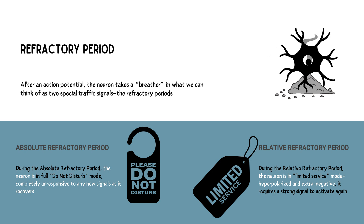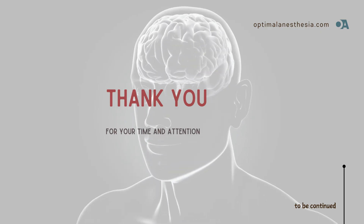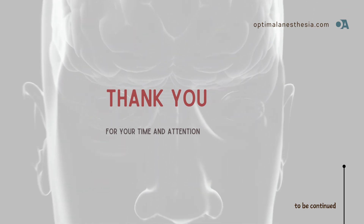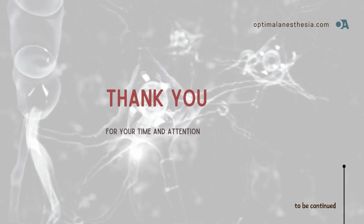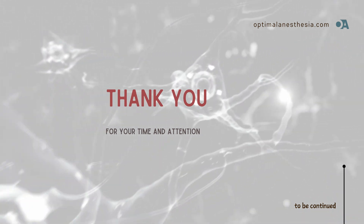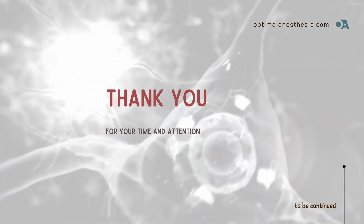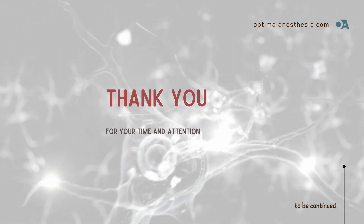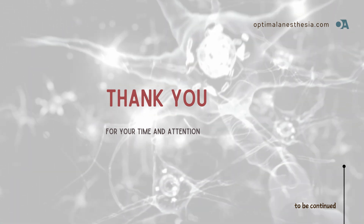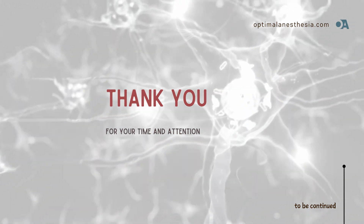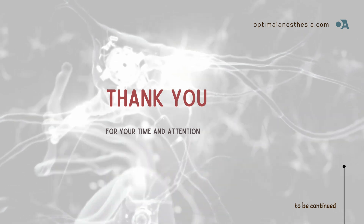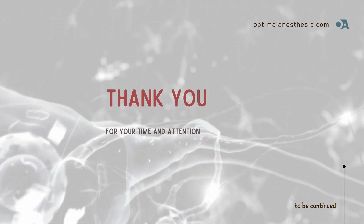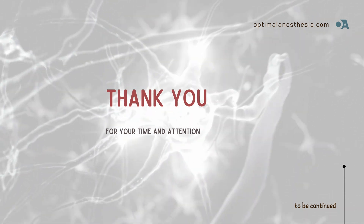And that's our intro to how neurons use resting potential, action potential, and refractory periods — but we're just getting started. In the next episodes, we'll dive deeper into how different anesthetics — like volatile agents, local anesthetics, and other drugs — use these processes to manage pain and keep the brain calm for surgery. Hit subscribe and stay tuned — you won't want to miss it. Thanks for watching, and see you next time!